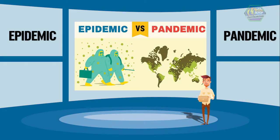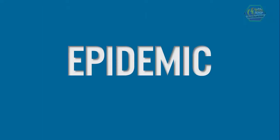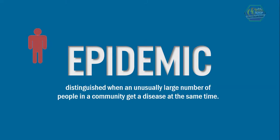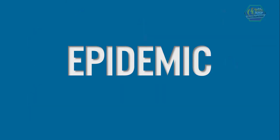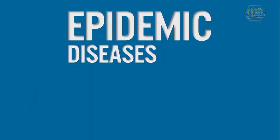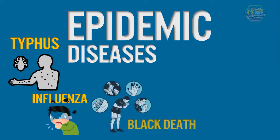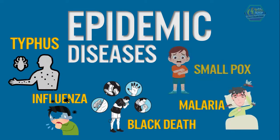First, let's talk about epidemic. An epidemic is distinguished when an unusually large number of people in a community get a disease at the same time. This makes people deduce that there's a disease being spread among them. Epidemic diseases include typhus, influenza, the black death, malaria, and smallpox.